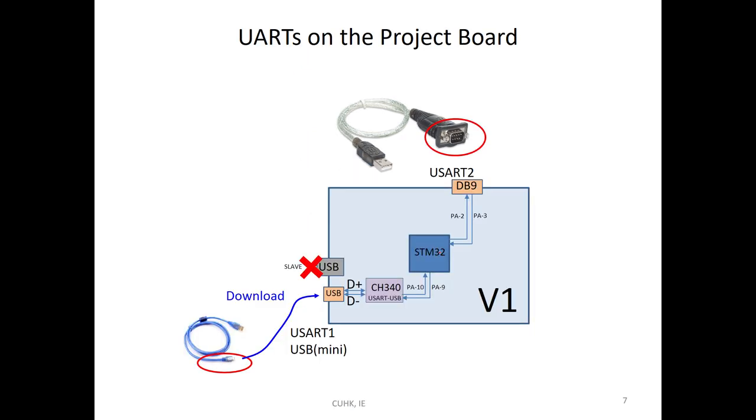Now our board. The PA-9, PA-10 through the onboard CH340 then convert to USB. Then you can use USB cable to download. And another side PA-2 and PA-3 connect to the DB-9 socket. This socket is DB-9 socket. Then you have to use a cable with USB to serial converter inside.